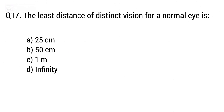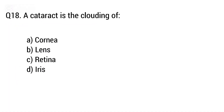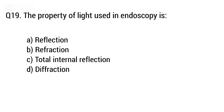Question 17: The least distance of distinct vision for a normal eye is? The right answer is option A — 25 cm. Question 18: Cataract is the clouding of? The right answer is option B — Lens. Question 19: The property applied in an endoscope is? The right answer is option C — Total internal reflection.